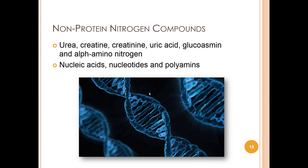The non-protein nitrogen compounds — urea, creatinine, uric acid, glucosamine, and alpha-amino nitrogen — as well as nucleic acids, nucleotides, and polyamines, have metabolic and immune functions and contribute about 20% of nitrogen.